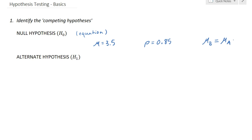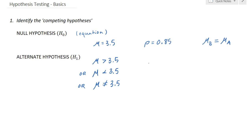Your alternate hypothesis represents the other possibility. So if our null hypothesis is that the mean value is 3.5, your alternate hypothesis might be that the mean is greater than 3.5, less than 3.5, or simply not equal to 3.5 — it depends on the opposing viewpoint. Similarly, if the null is that the proportion is 85%, the alternate could be more than, less than, or not equal to 85%.